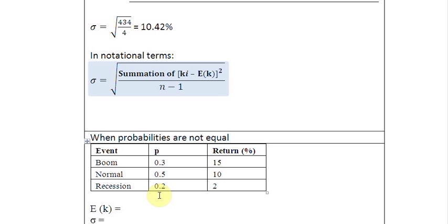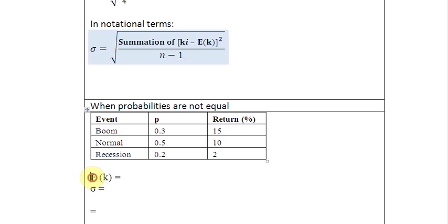So the first thing that we need to do is to find out the expected return, E(k), or if you like to call it k bar, so be it. How do we do that? We multiply this probability by this number, plus this probability by this number, this probability by this number, and write down the result. So I'm just going to write down the result for you here: 9.9% expected return.